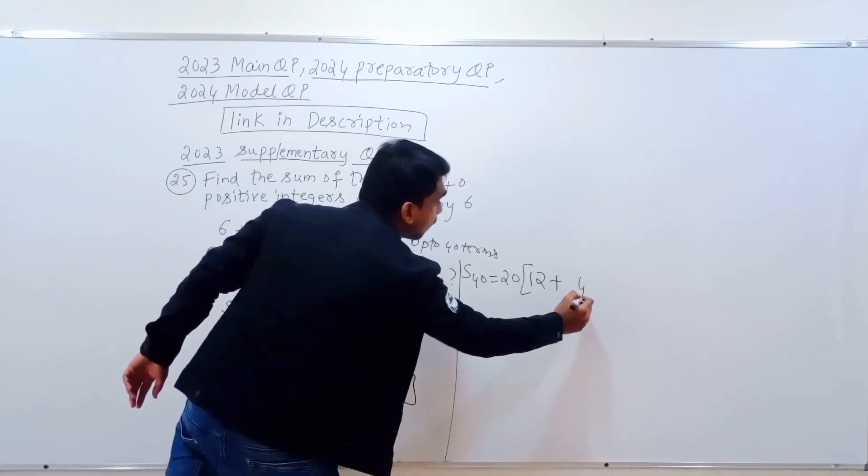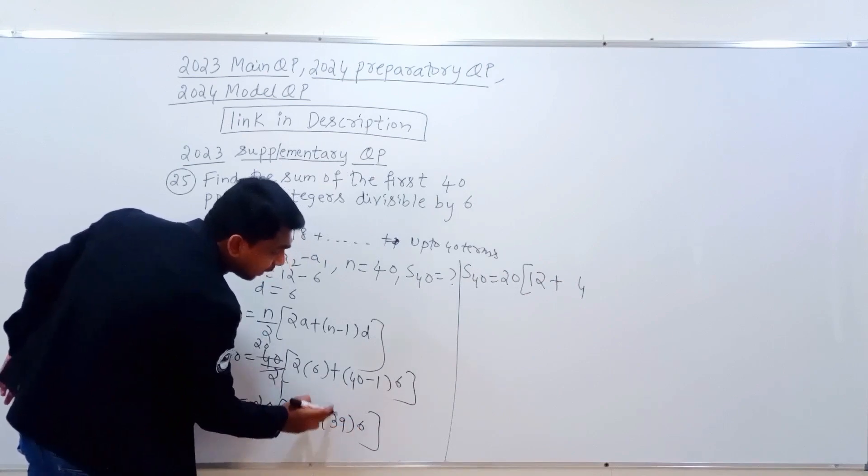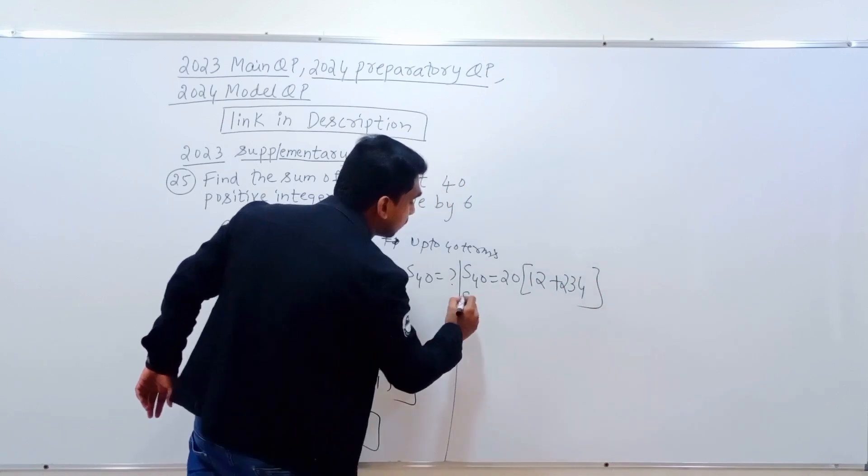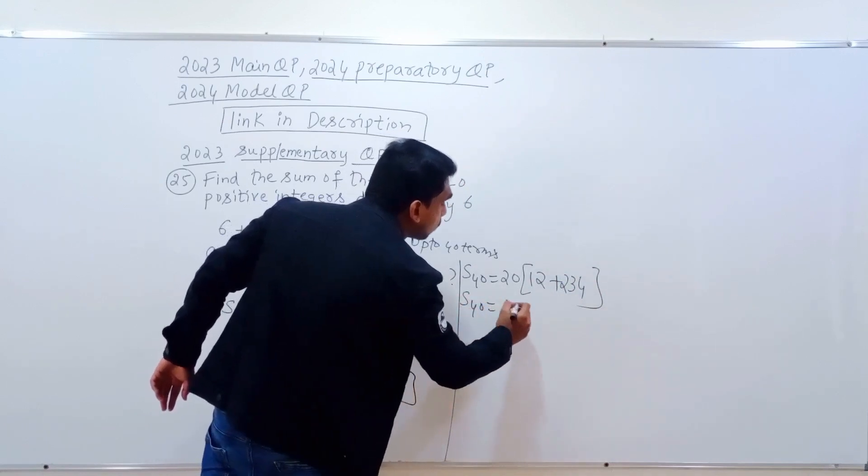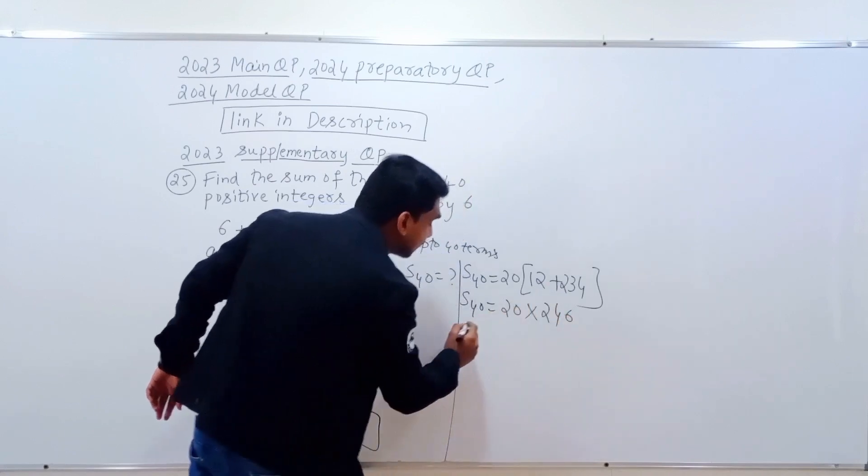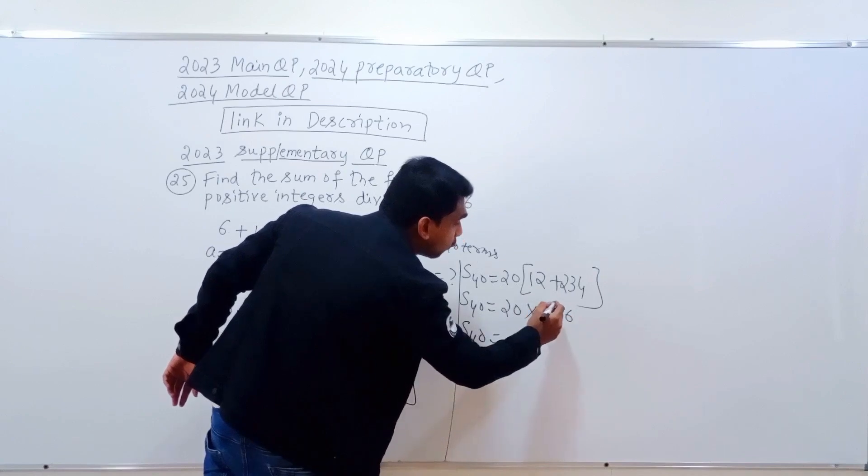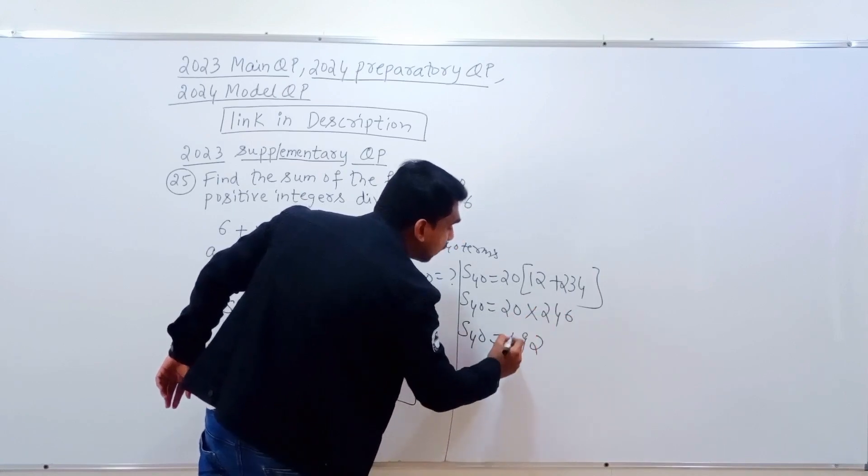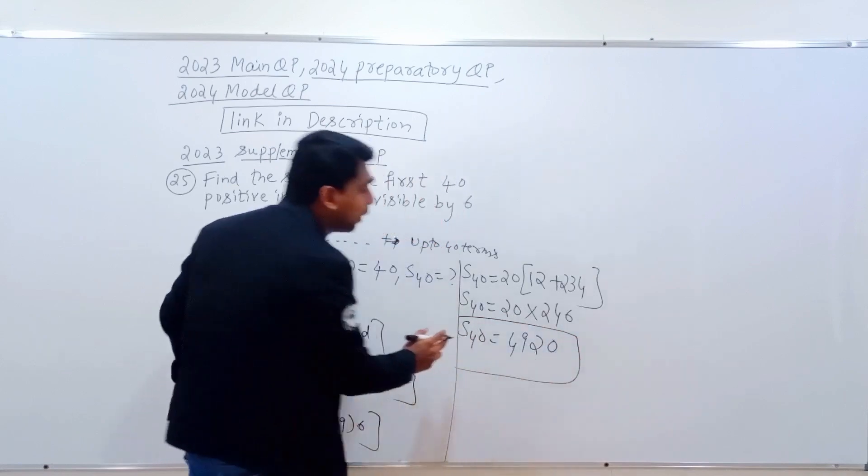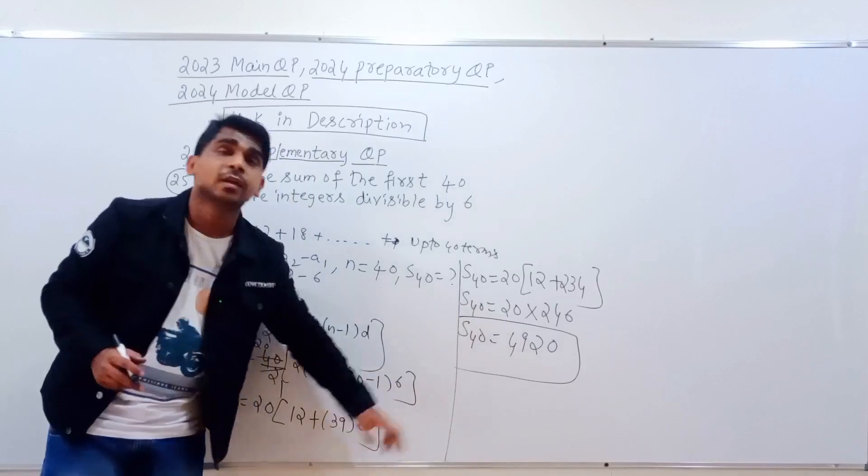39 times 6 is 234. 12 plus 234 is 246. S40 equals 20 into 246, which is 4920. So sum of 40 positive integers divisible by 6 is 4920.